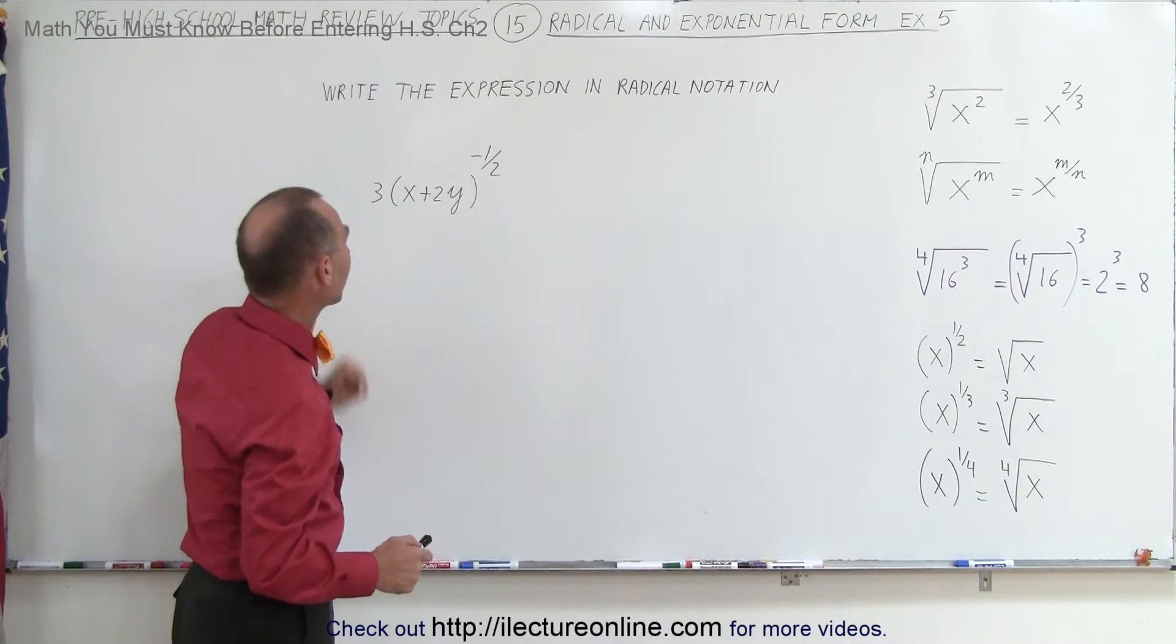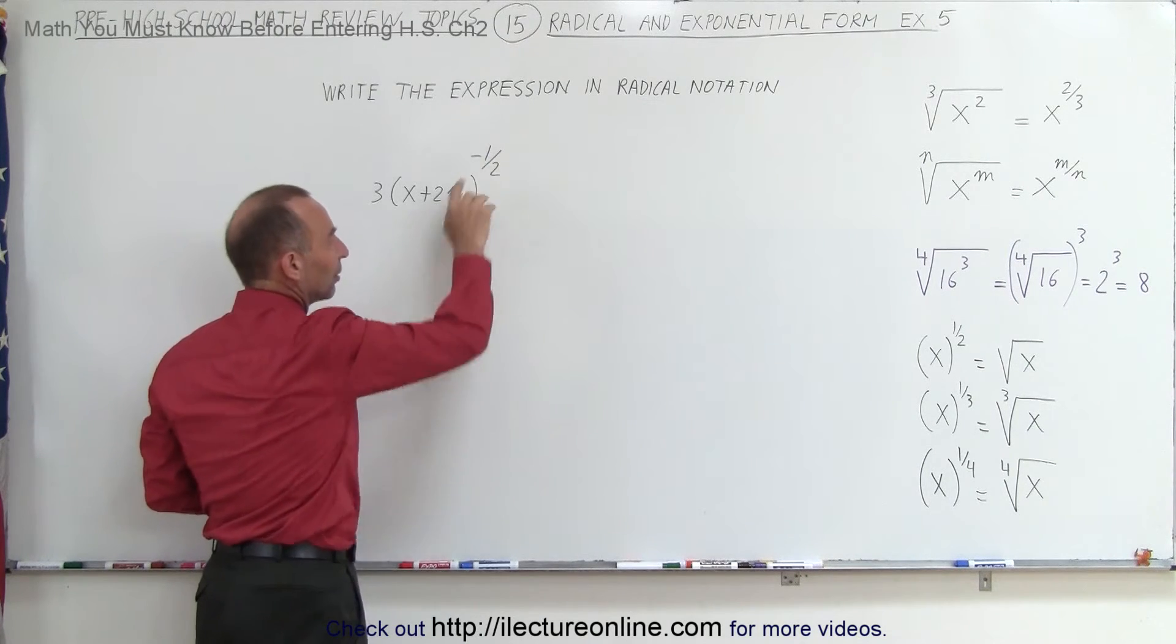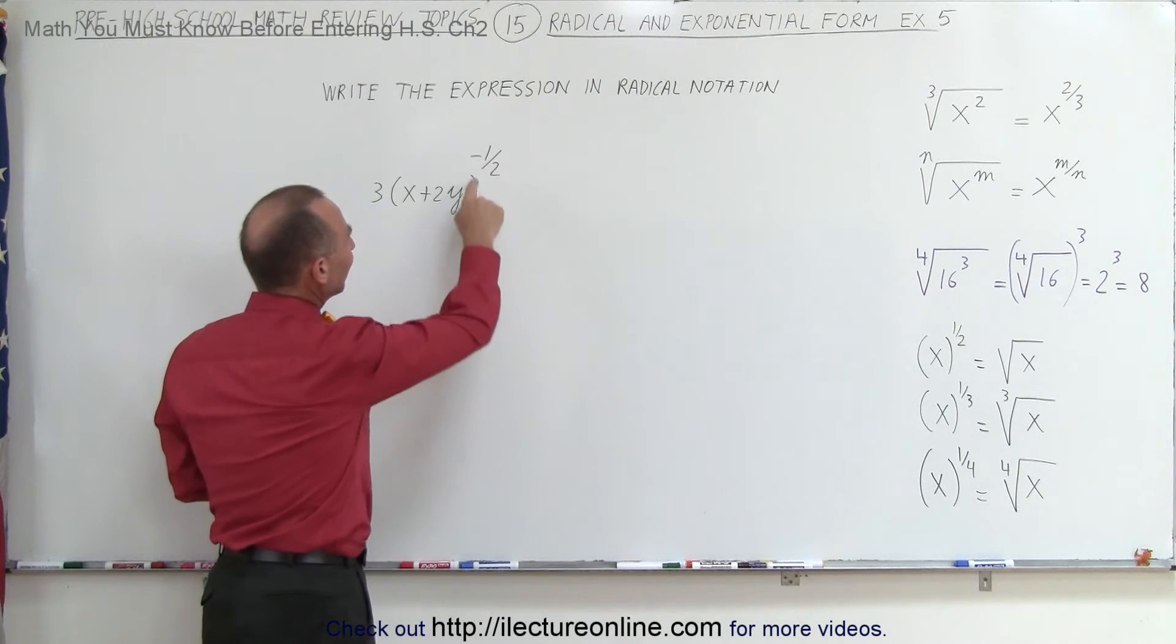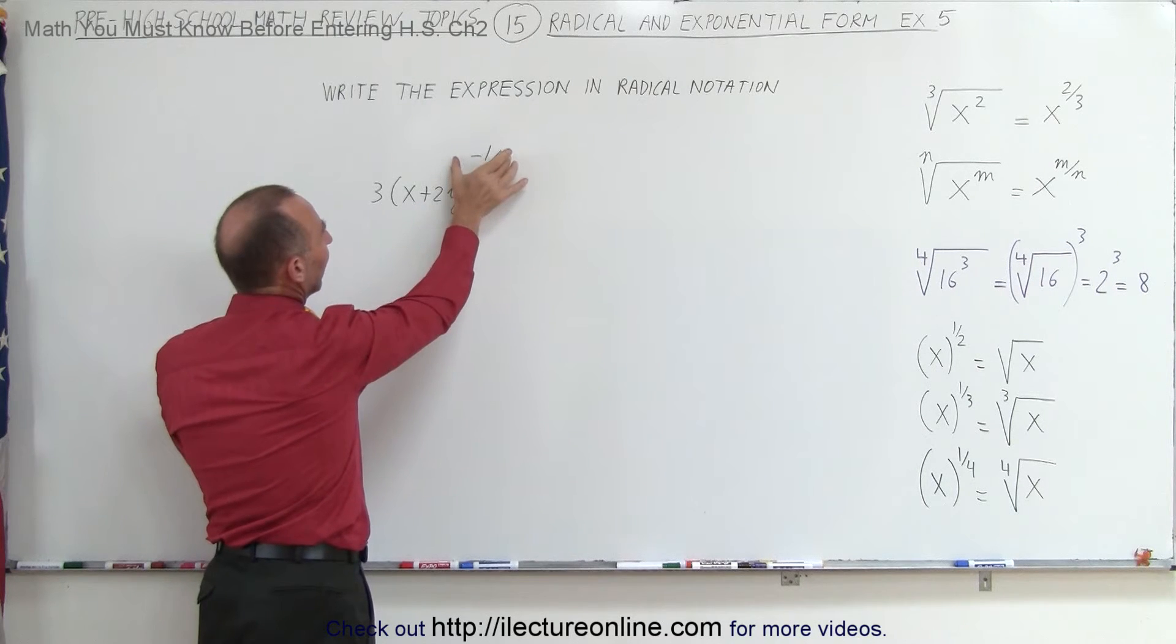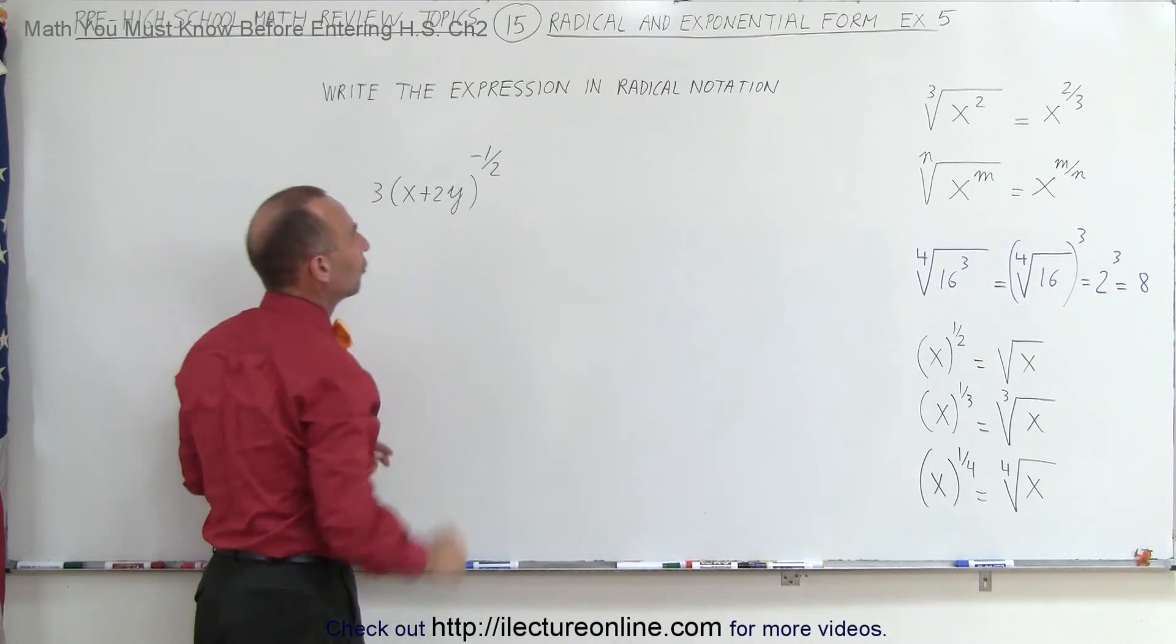So now we have a problem that looks like this. First of all, we realize we see a 1 half right here, which means that we probably need to take the square root somewhere, a radical square root. We have a negative sign, we'll deal with that in a moment, but also realize that this exponent only applies to what's inside the parentheses, not to the number 3.